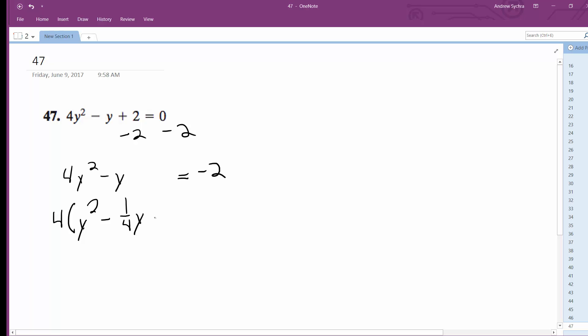Take half of this then square that so I get 1 eighth squared, so I get 1 over 64. Pull this out, multiply it times that so I get 4 over 64 and that's negative 2 plus 1 over 16.